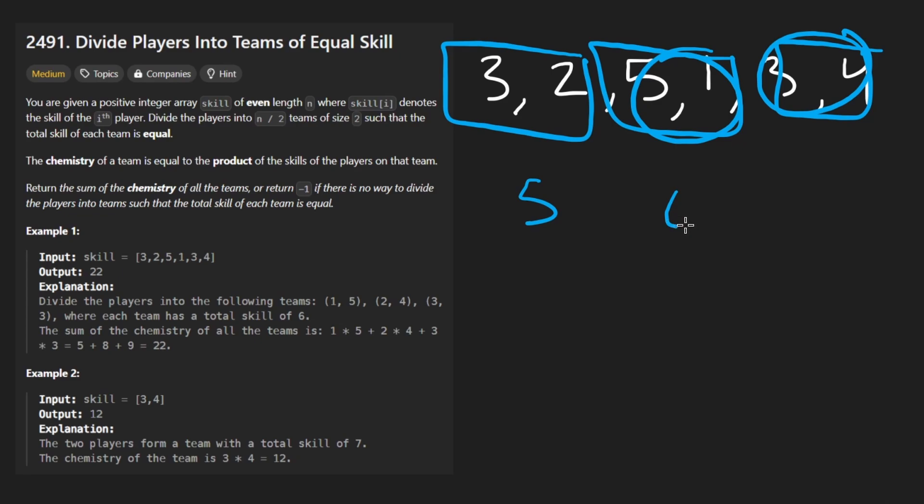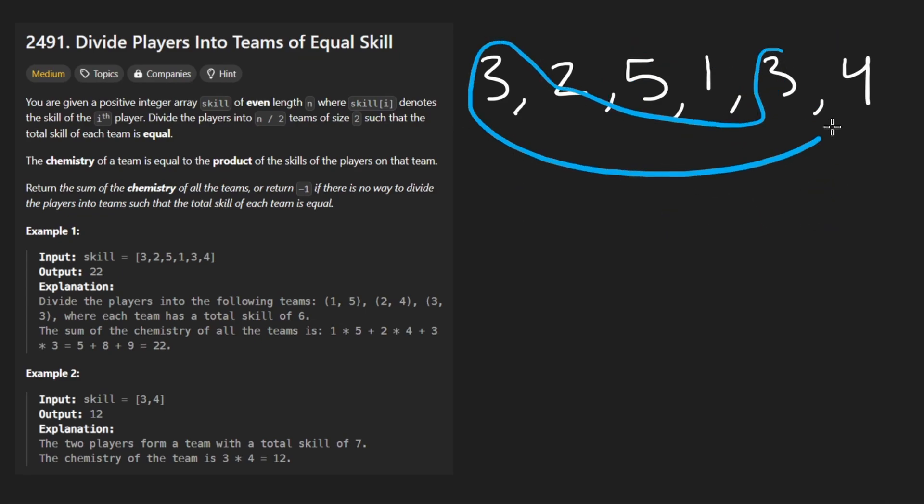So right now this is five, this is six, and this is seven. Clearly they are not the same. If we put both of the threes in a group, and then the two and the four, and then these two, then each of them will have a sum of six, and that does work.